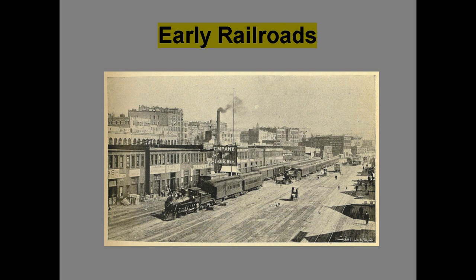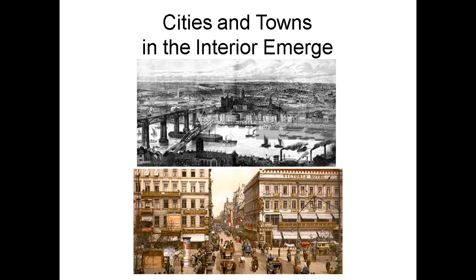By 1869, the Transcontinental Railroad was built — Thomas Jefferson had astutely asked Lewis and Clark to look for a route for one, and some 65 years later it came to fruition. A huge accomplishment that finally linked the two coasts of America. Cities and towns in the interior began to emerge and grow larger because of the expansion of industry and trade along these new transportation corridors. Many small villages became big cities and large centers.